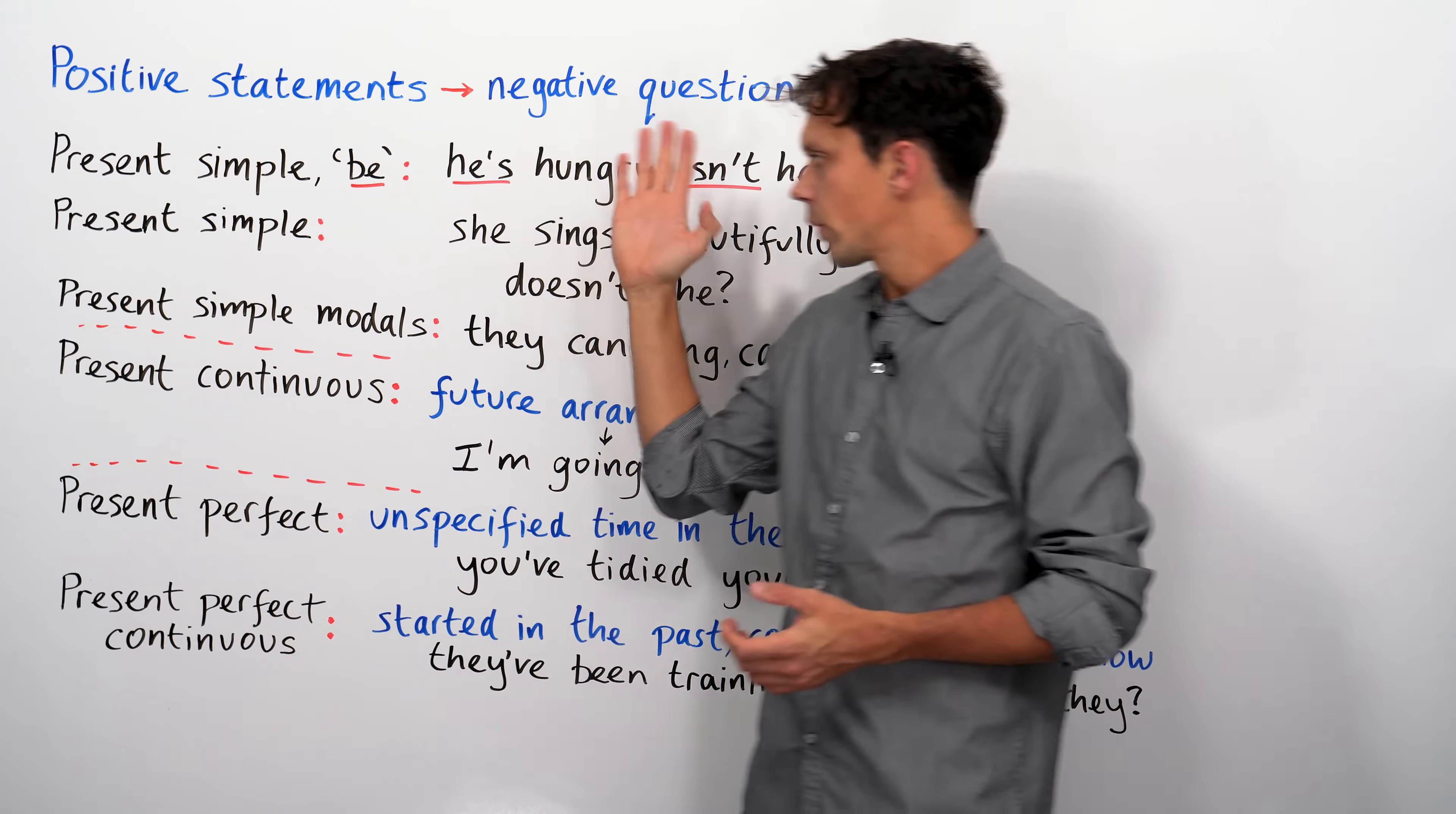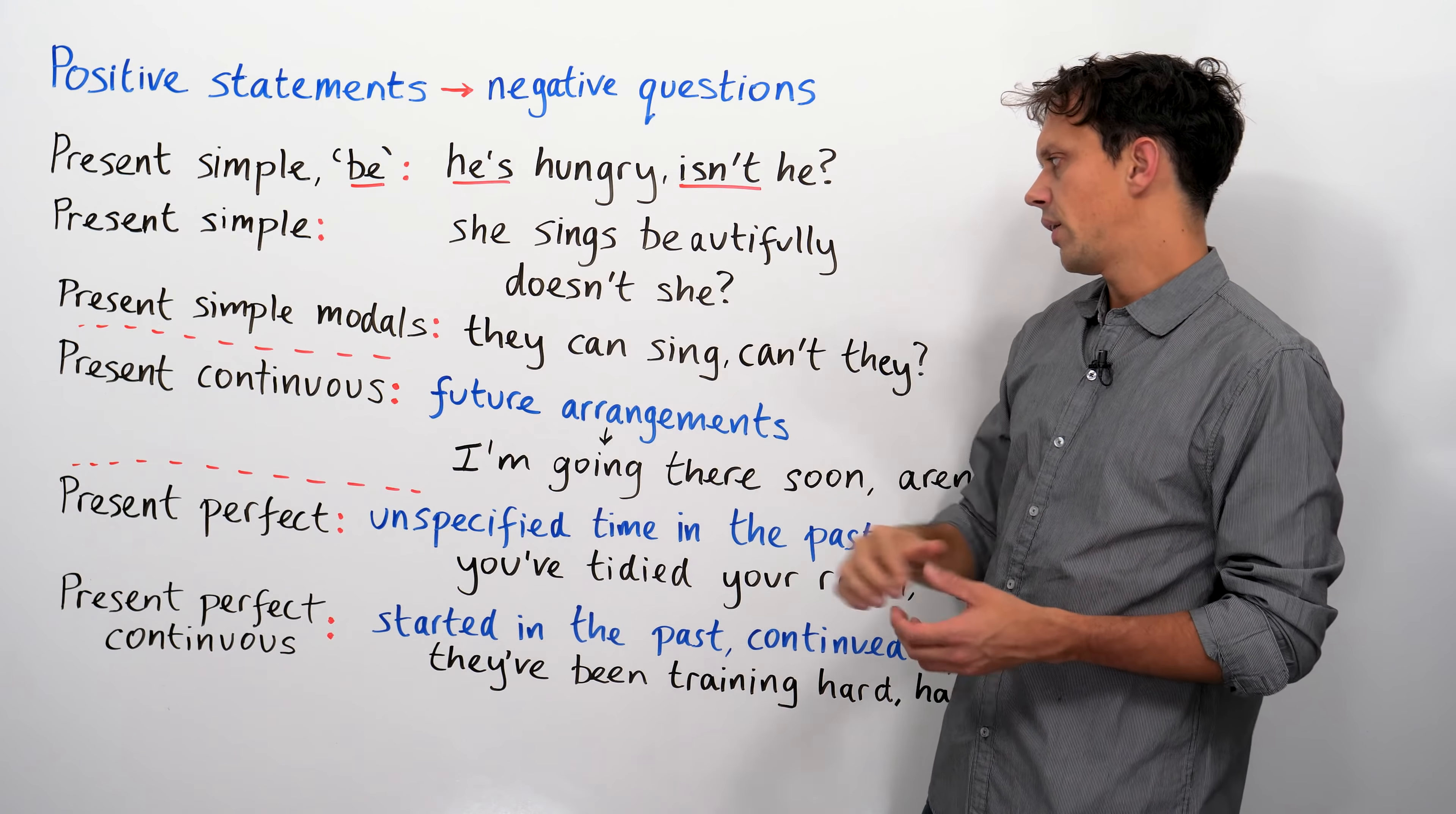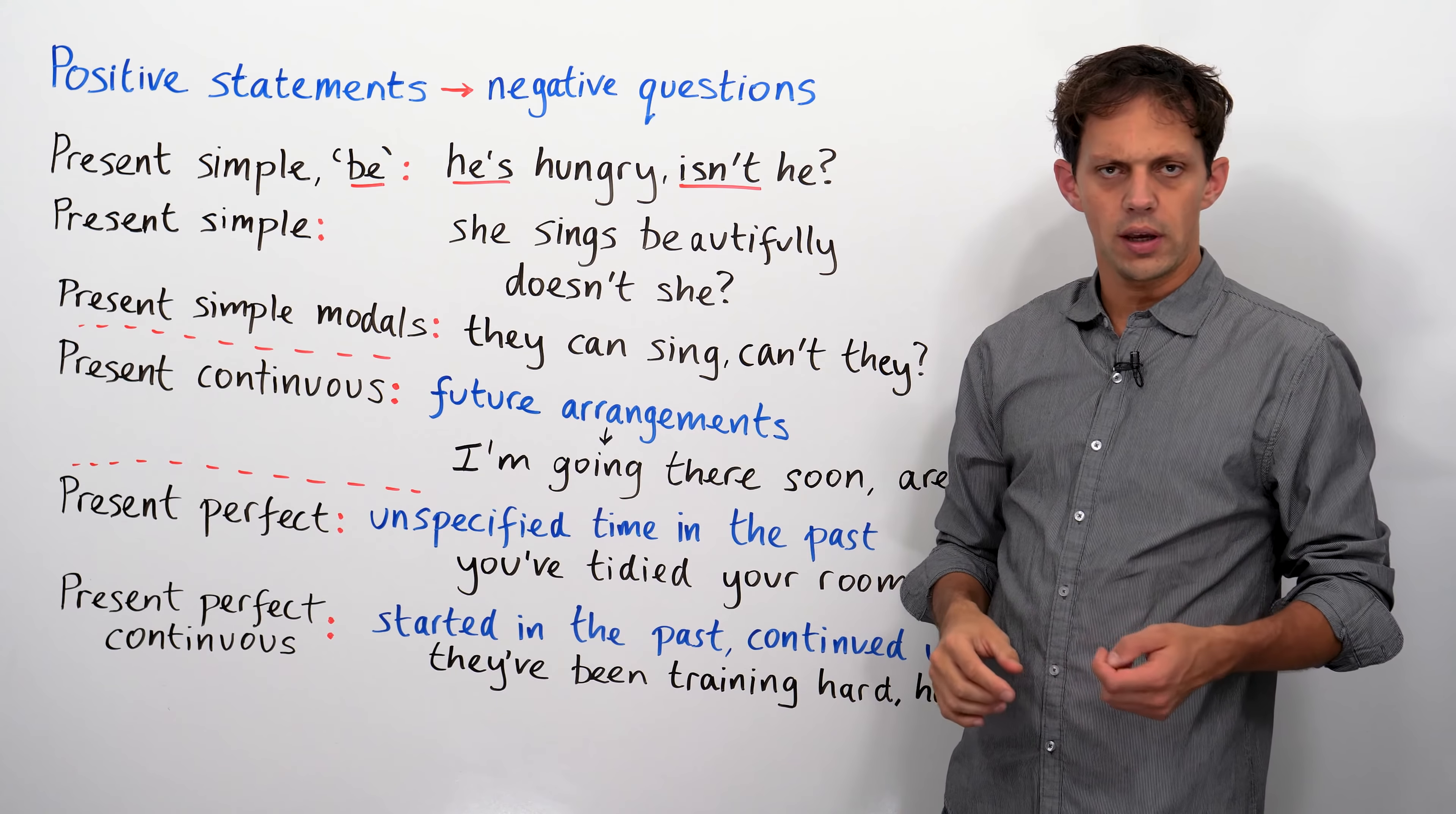Right. Most types of other verbs in the present simple. She sings beautifully, doesn't she? We're using the auxiliary verb, verb to do, does. We play well, don't we?